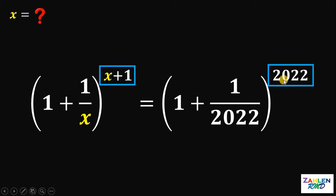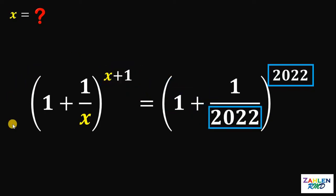Now, if the exponent on the right-hand side were just 2022, then we'd be done immediately. But the thing is, this is x and this is x plus 1. So what we're going to do is make the left-hand side equal to 1 plus 1 over n, raised to the same expression. That's our plan.